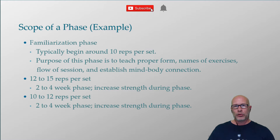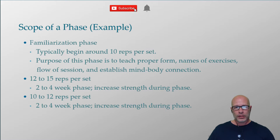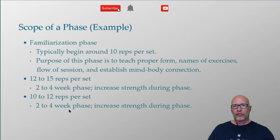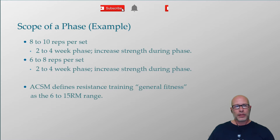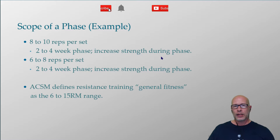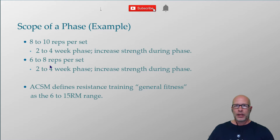I'm systematically adding variety into their program by dropping the repetitions by two, keeping them there for a two-to-four week phase. Once again, let's say it's four weeks — I increase strength during that phase so at the end they're stronger at 10 to 12 reps. Then I drop them to eight to ten repetitions per set for another two-to-four week phase, increase strength during that phase, and at the end they're stronger than they were in week one.